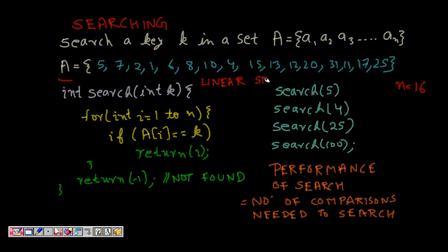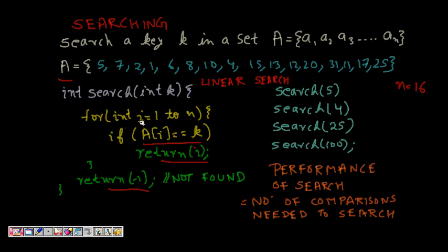The linear search algorithm runs a loop for i equal to 1 to n. If a[i] equals the key, it returns the index — meaning the key was found at that index. Otherwise, if the key is not found in any of the n elements, it returns minus 1, indicating the element was not found. This is the linear search algorithm.